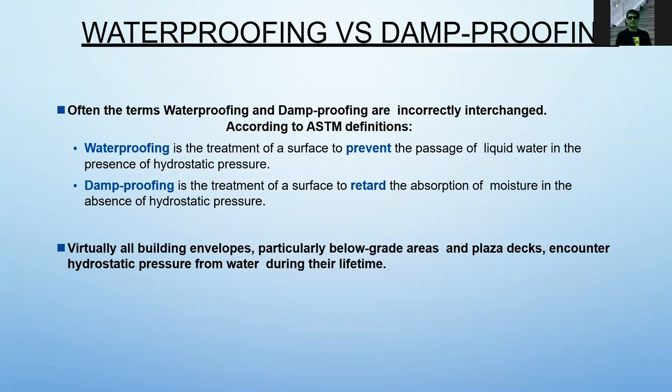Waterproofing versus dampproofing — often these two terms are incorrectly interchanged. According to ASTM definitions, waterproofing is the treatment of a surface to prevent the passage of liquid in the presence of hydrostatic pressure. Dampproofing is the treatment of a surface to retard the absorption of moisture in the absence of hydrostatic pressure. So there is a key difference between the absence and presence of hydrostatic pressure.